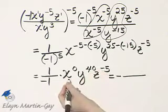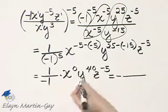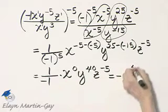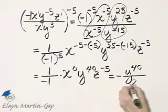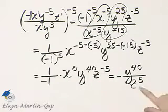So that's 1 times all of these other factors, which would just be all of these other factors. I have y to the 40th that will remain in the numerator. And then I have that z to the negative 5, which becomes a z to the fifth in the denominator.